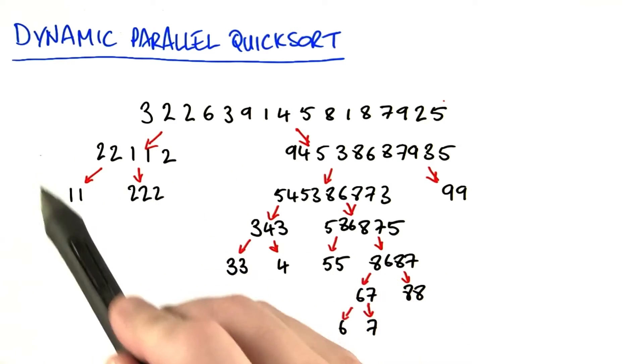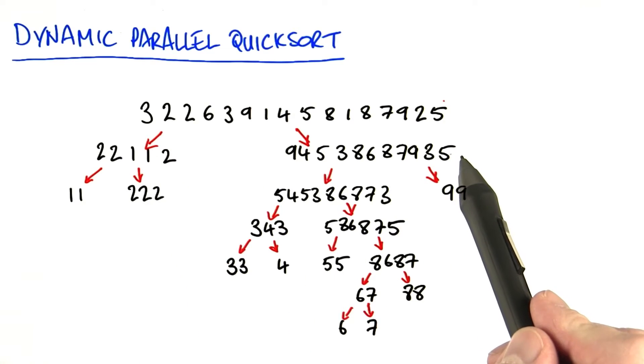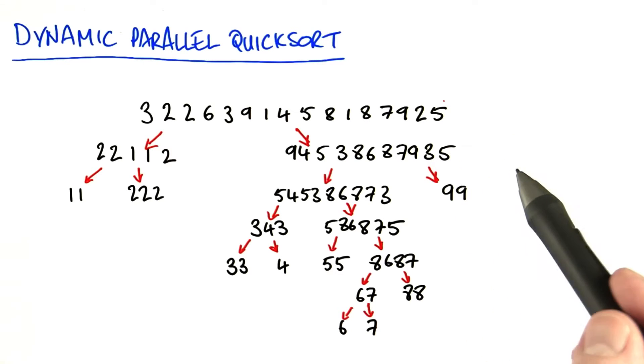For example, this one on the left will launch its children while the one on the right is still working, because there's more work to do on the right-hand side here. Each sort will be running independently of any others. I'm not waiting around for the slowest sort anymore, and my GPU is kept busy.